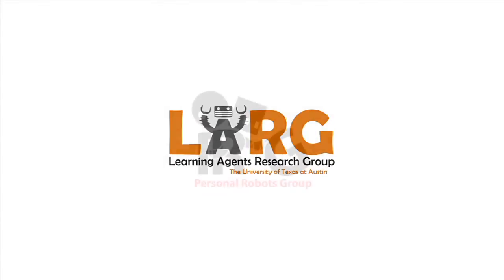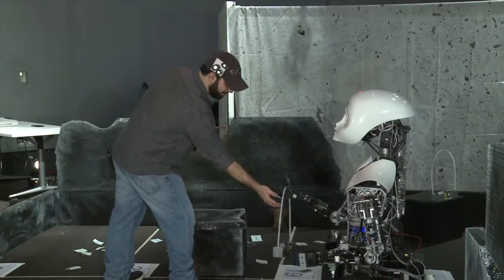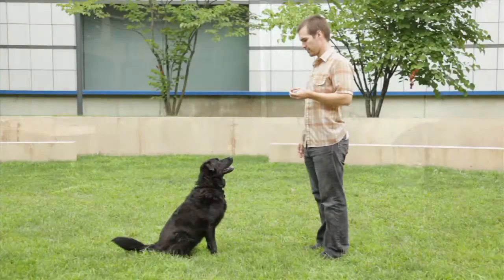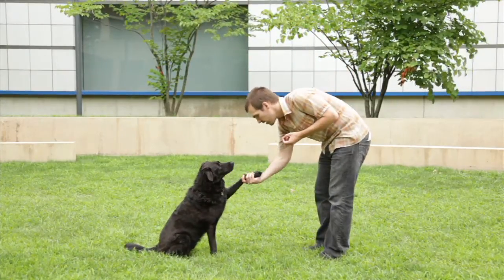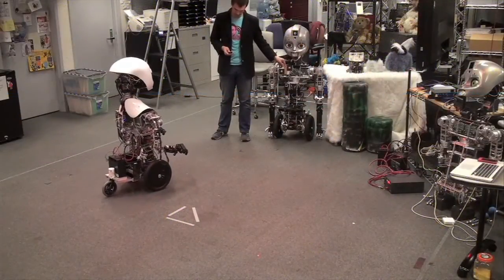We're working to program robots and other computational agents so they can be taught behaviors by anyone, regardless of their technical knowledge. Just like animal training, this research focuses on training by human-generated reward and punishment, or as we refer to it in our research, positive and negative reward.